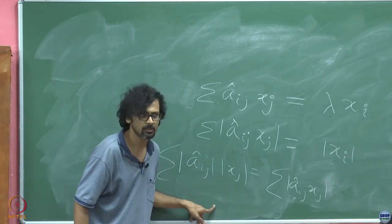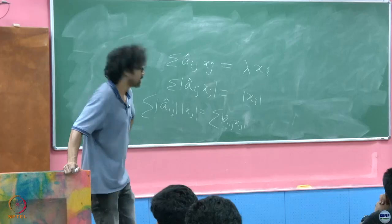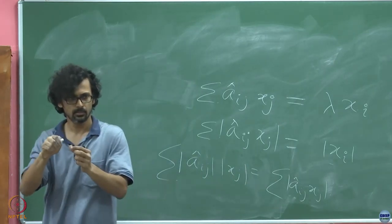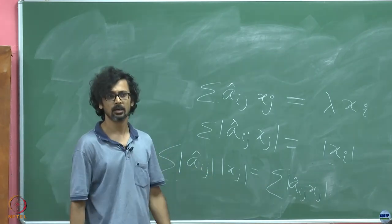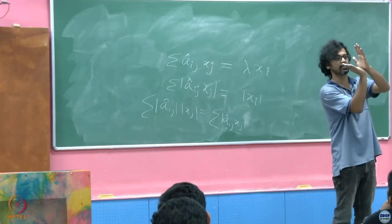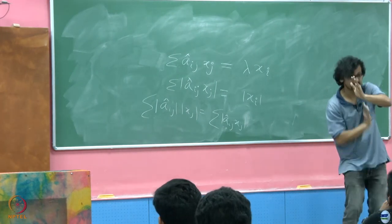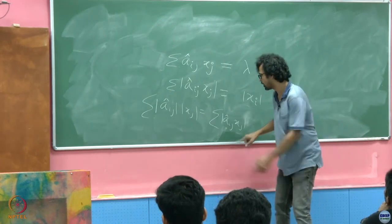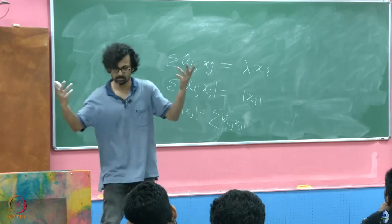If λ were a complex number of unit modulus, this would still be true. But what does this tell us? Summing up both sides — we need Σ_j Â_{ij} x_j = |Σ_j Â_{ij} x_j|. This is a sum of complex numbers; complex numbers are like vectors in 2D space. If you scale complex numbers by real numbers (A_{ij} are real) and add them, unless they are all aligned, you cannot have equality.